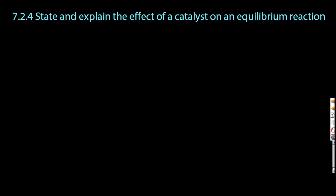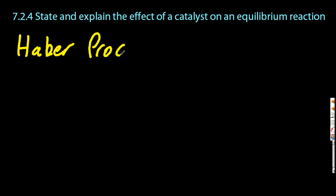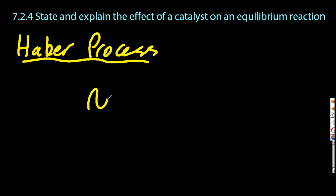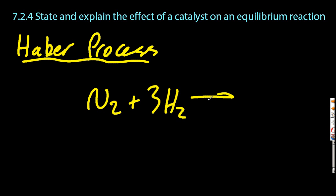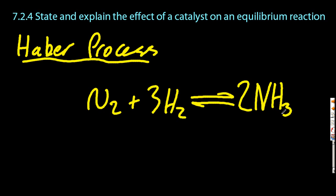We'll have a look at the Haber process as our example here. You need to know the Haber process as well as the contact process. The Haber process takes nitrogen and hydrogen and combines them to form ammonia, which is used as toilet cleaner. No one ever got rich selling toilet cleaner, but you can turn ammonia into explosives and fertilisers.